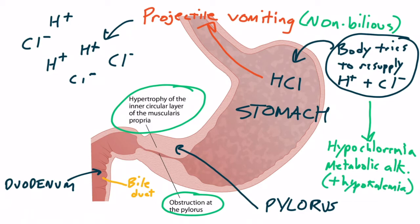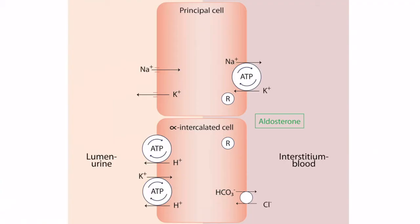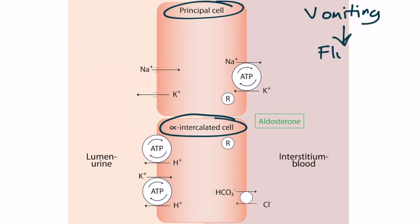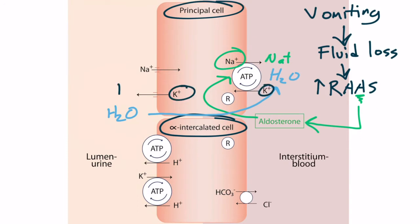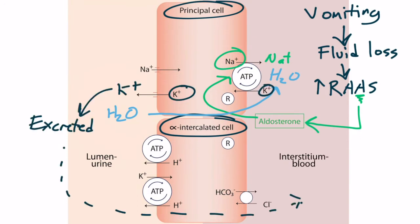The reason they get hypokalemia is best understood this way. This image demonstrates the cells of the collecting duct of the nephron. There are mainly two cell types in the collecting duct: the principal cells and the alpha-intercalated cells. Prolonged vomiting results in fluid loss, which stimulates the renin-angiotensin-aldosterone system. Aldosterone production will be increased, and this aldosterone acts on the collecting duct of the kidney to increase uptake of sodium — water follows sodium — and this occurs in exchange for potassium, so potassium will be excreted, resulting in hypokalemia.